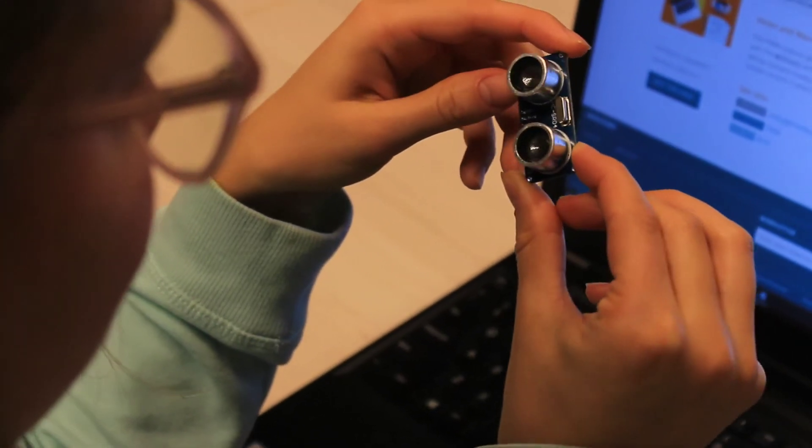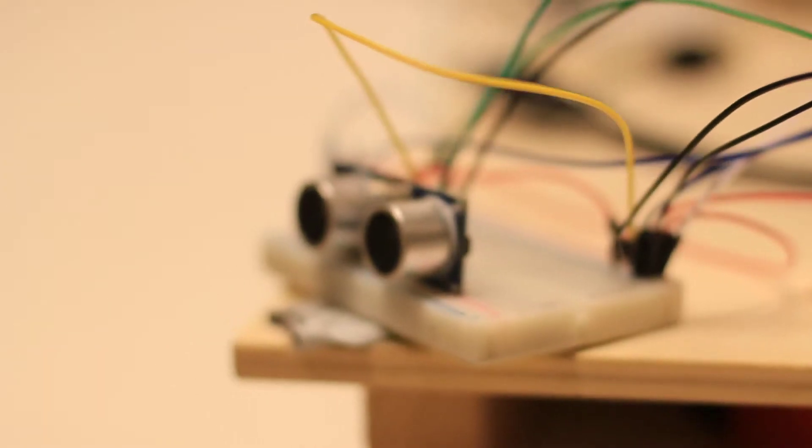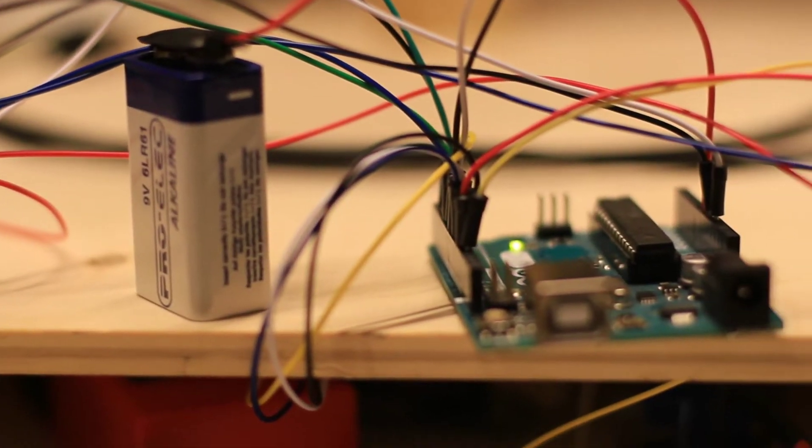A second Arduino handles the input from our sonar sensors. If an obstacle comes closer than 30 cm it will give this information and the direction in which the obstacle was detected to the third Arduino.